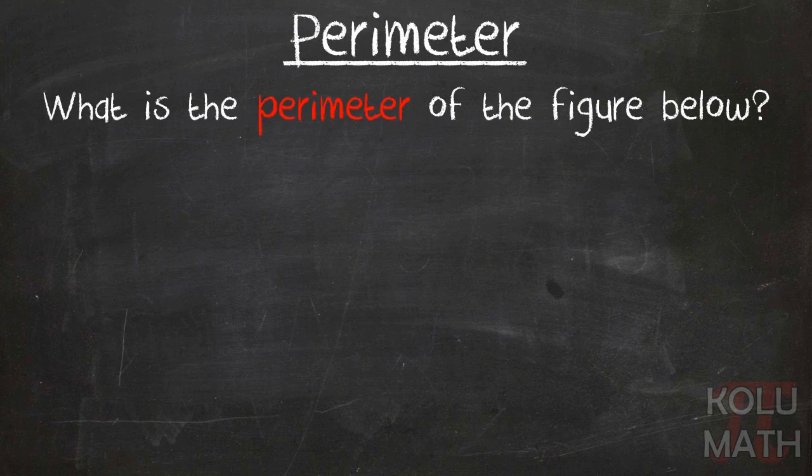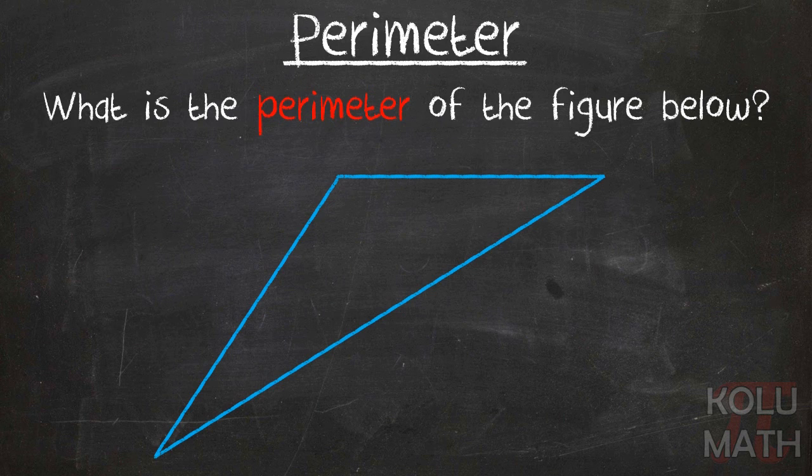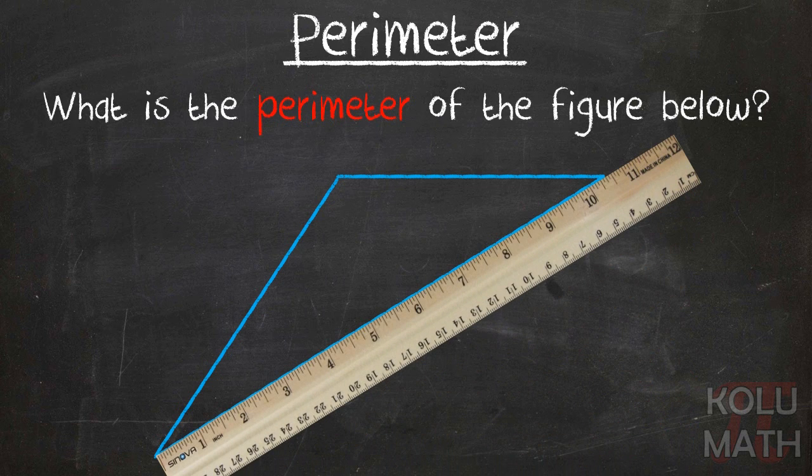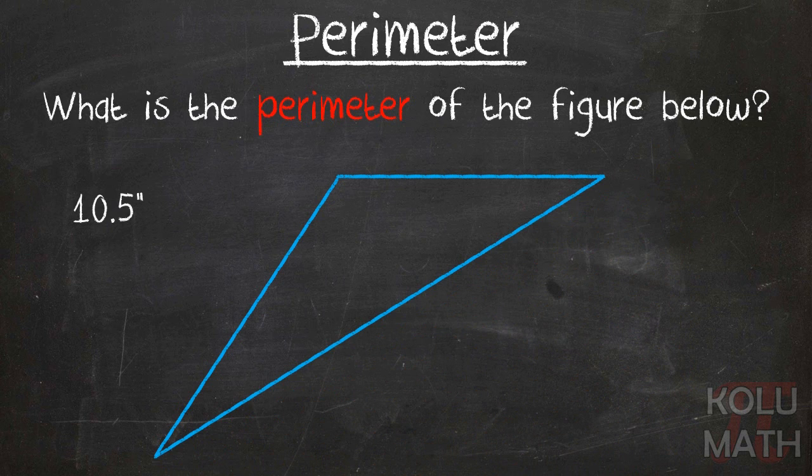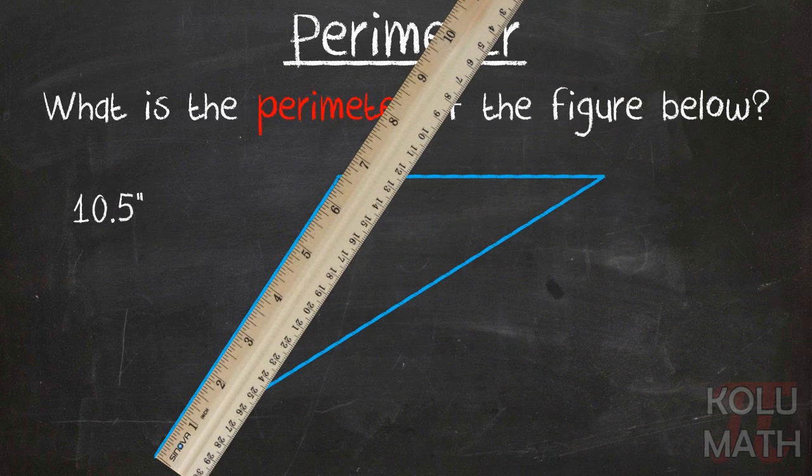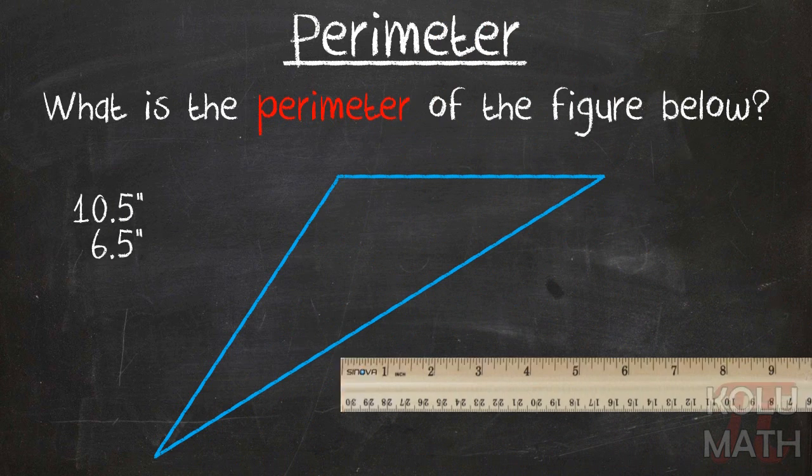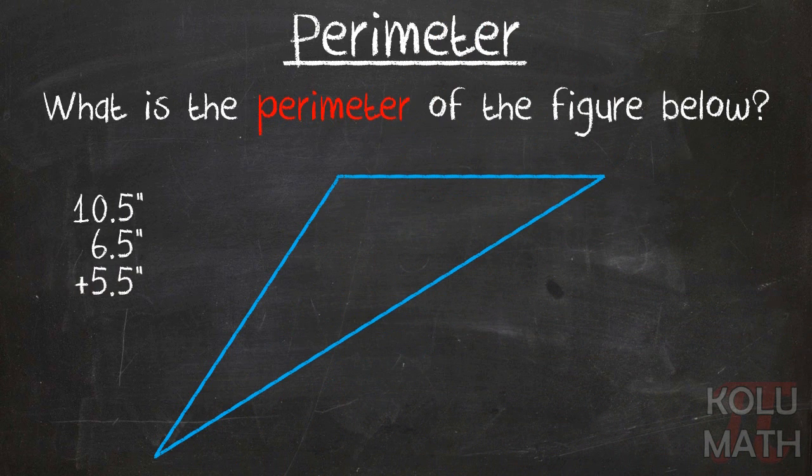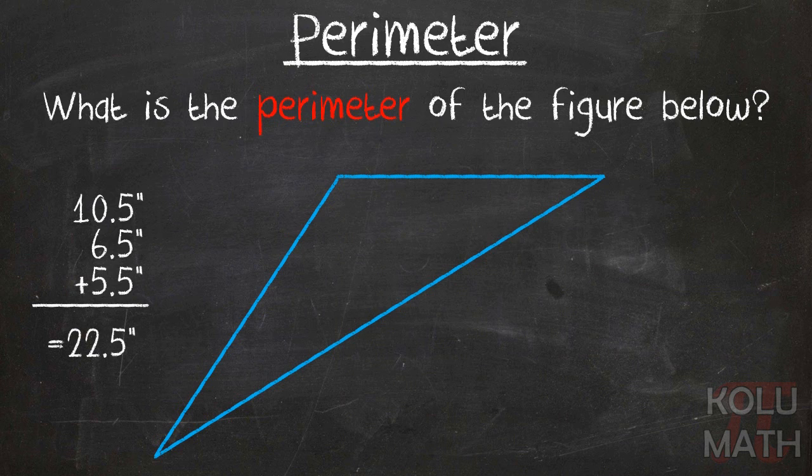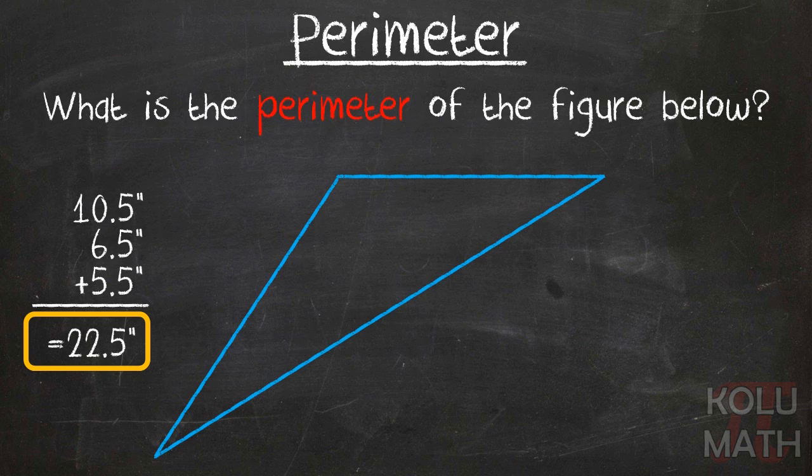Let's look at some examples. What is the perimeter of the figure below? Well, it looks like we've got a triangle there. So I'm going to do this sort of the old-fashioned way and just measure the sides. So the first one, I've got 10 and a half inches. The second one, I've got six and a half inches looks like. And the third one looks about five and a half inches. We add all that up together and we get 22.5 inches, the total perimeter for the shape. Just that simple. Take all the sides, measure them and add it up.